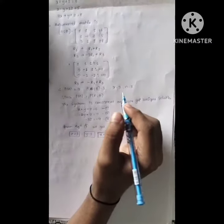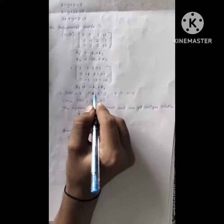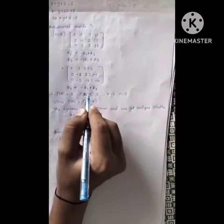We will again do the row transformation here, that is r3 becomes minus r2 plus r3.